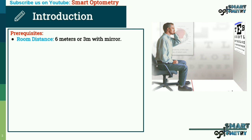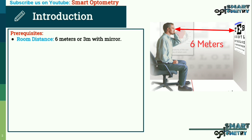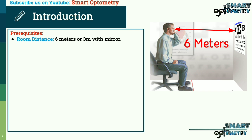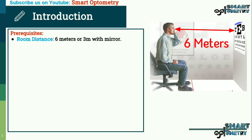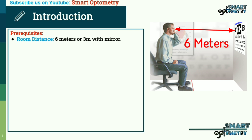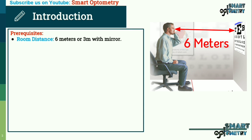The first prerequisite is room distance. Room distance should be 6 meters. But in clinical practice, getting a 6-meter room is very difficult. Mostly we have 3-meter rooms, so in that case we can use a 3-meter room with a mirror.